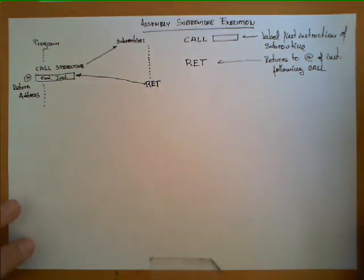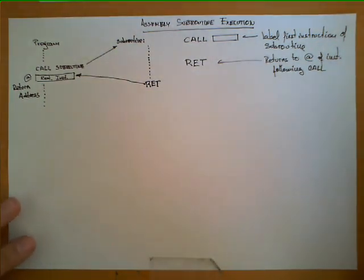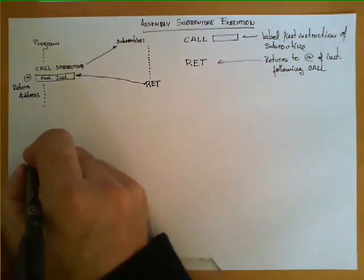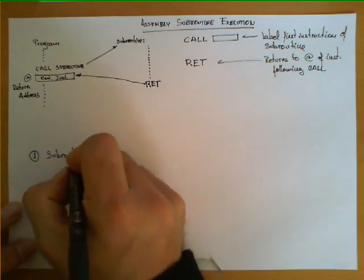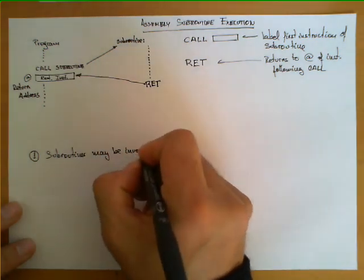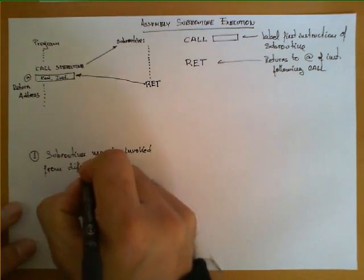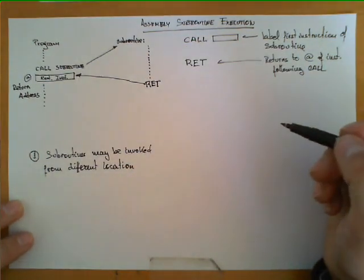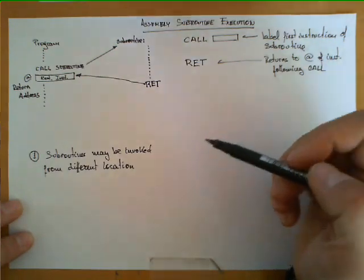There are four observations that need to be taken into account to explain exactly how this mechanism works. Observation number one is that subroutines may be invoked from different locations. This is very important — it is not always the case that a subroutine is invoked by just one program.